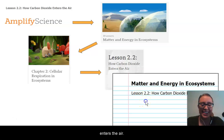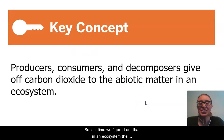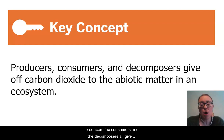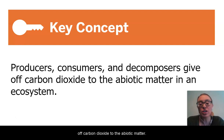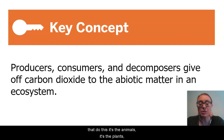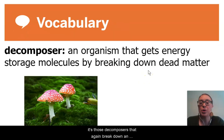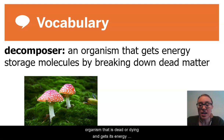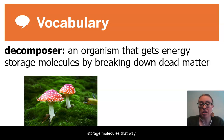My cat's coming to say hi today! So last time we figured out that in an ecosystem, the producers, the consumers, and the decomposers all give off carbon dioxide to the abiotic matter. It's not just the consumers, it's not just the animals that do this — it's the animals, it's the plants, it's those decomposers that break down an organism that is dead or dying and get their energy storage molecules that way.